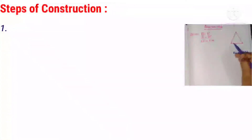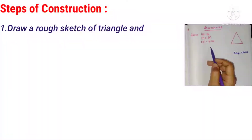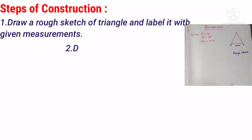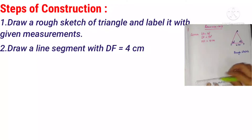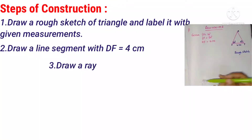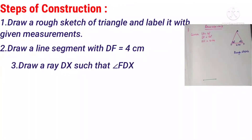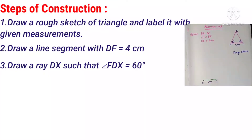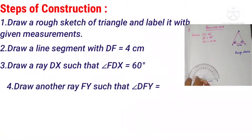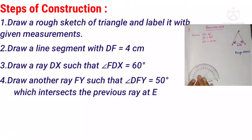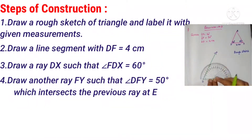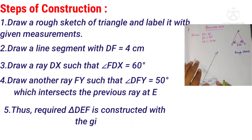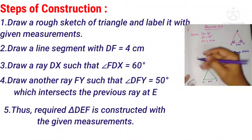Steps of construction: First, draw a rough sketch of the triangle and label it with the given measurements. Second, draw line segment DF equals 4 cm. Third, draw ray DX such that angle FDX equals 60 degrees. Fourth, draw another ray FY such that angle DFY equals 50 degrees, which intersects the previous ray at E. Fifth, the required triangle DEF is constructed with the given measurements.